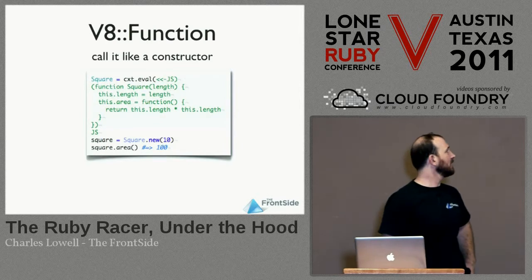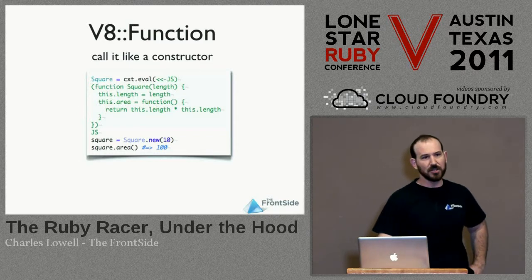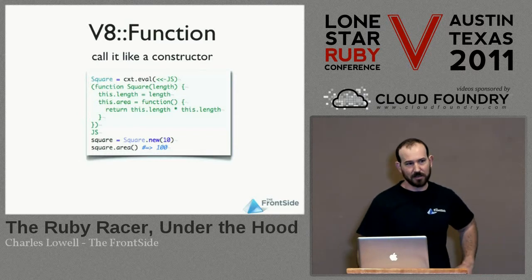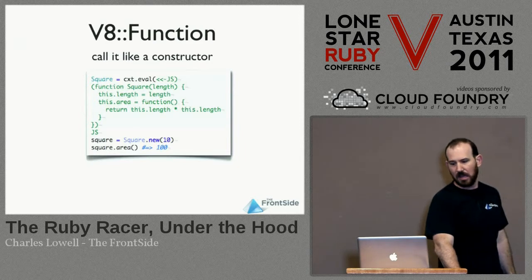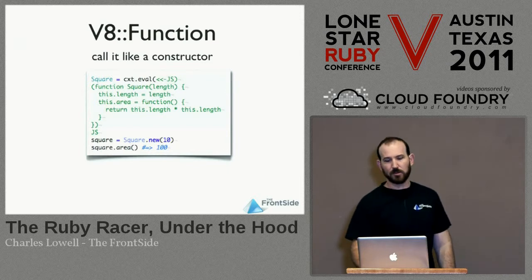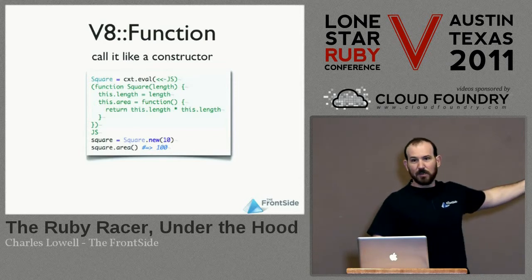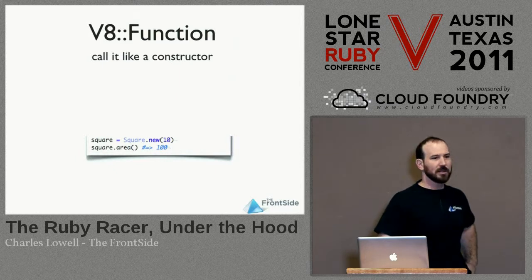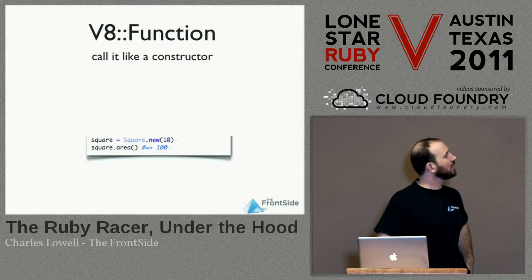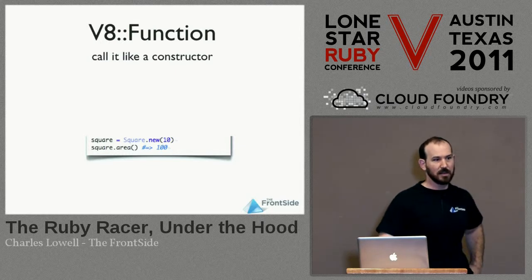Finally, you can invoke any JavaScript function as a constructor. There's a 'new' method on V8::Function. Here we define a Square constructor in JavaScript — I'm sure everybody's seen this example — and then we create a new square with a radius of 10 and invoke the area method. One interesting thing here: if I were to take this away, would you know that wasn't a Ruby class at all? That it was actually pure JavaScript that you were using. We'll actually see the converse of that later.